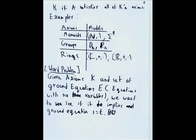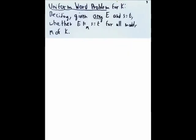And in particular, we split this word problem into three particular word problems. We have the uniform word problem for K, so we want to decide given any E, S equals T, so any set of ground equations E and S equals T, so these are given, whether that E proves S equals T for all models M of K.